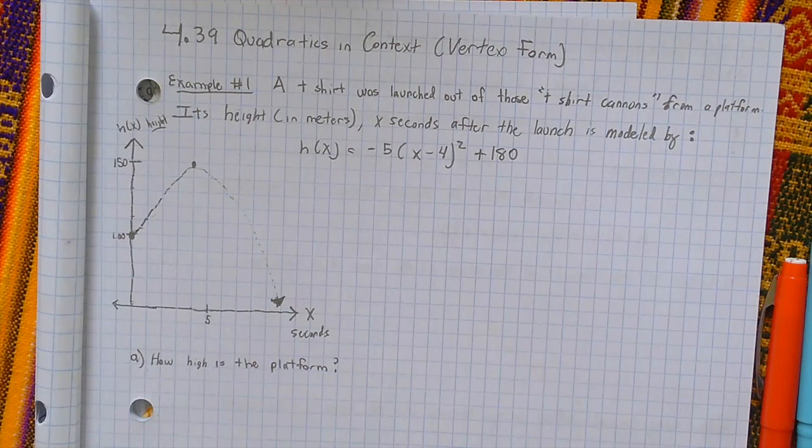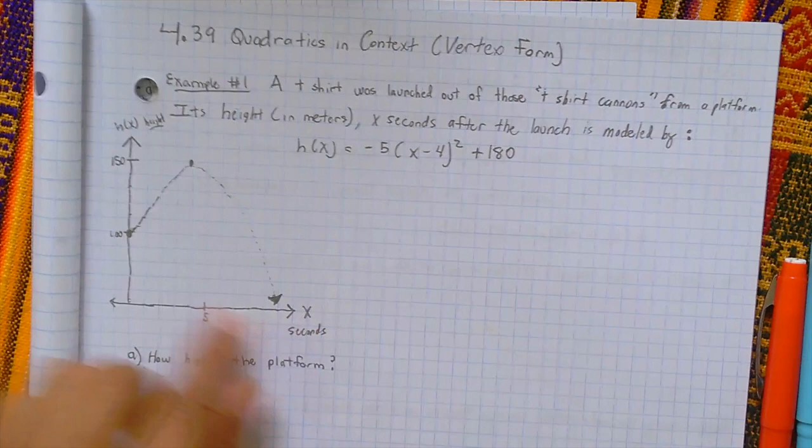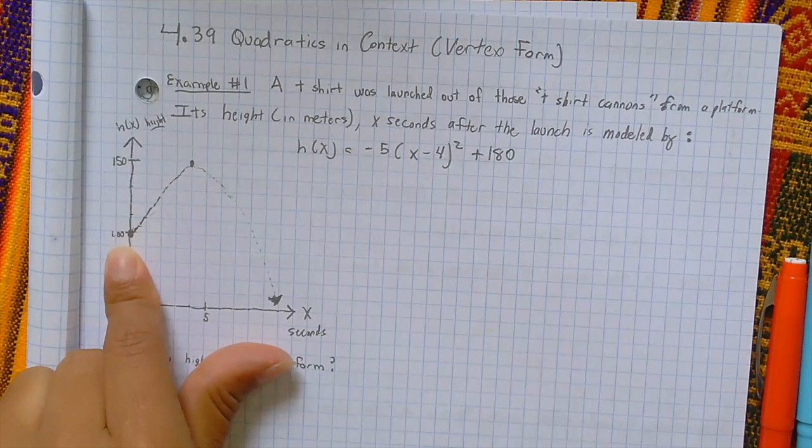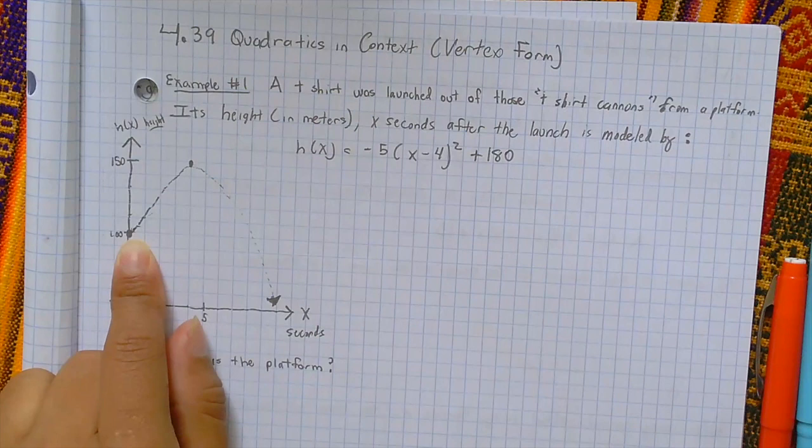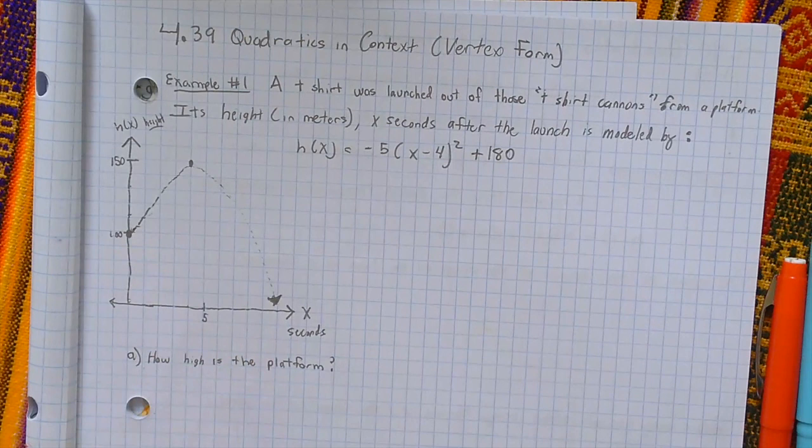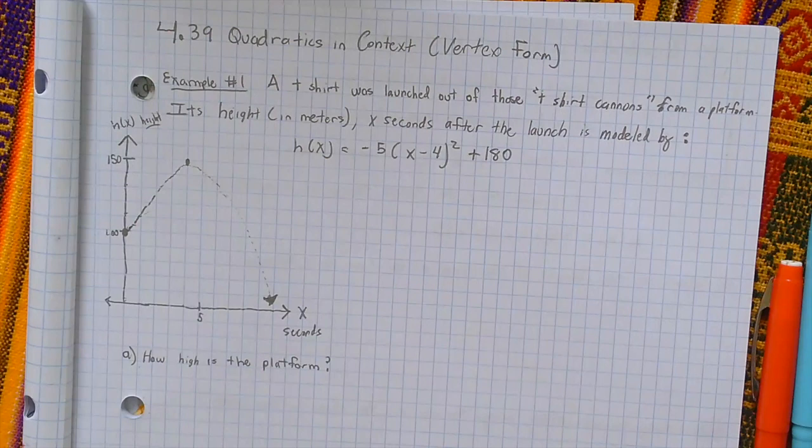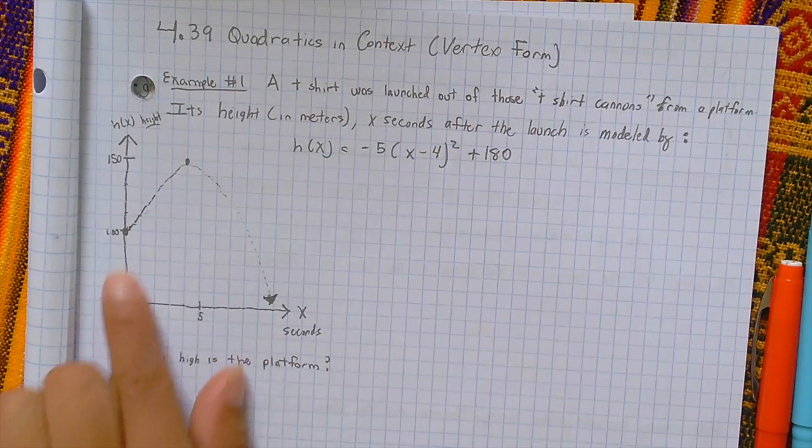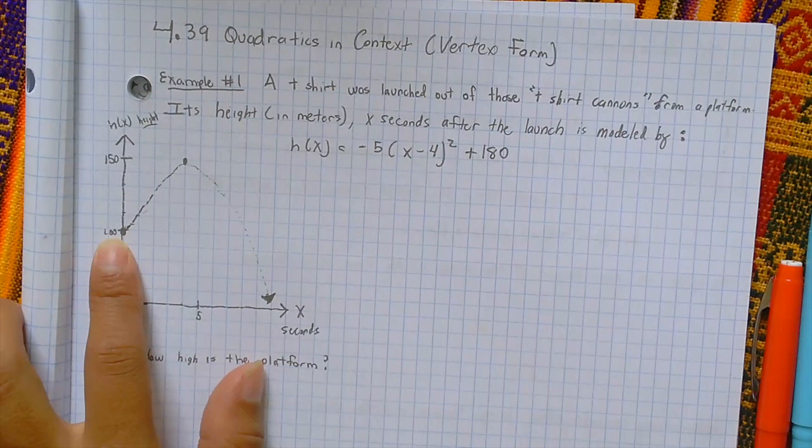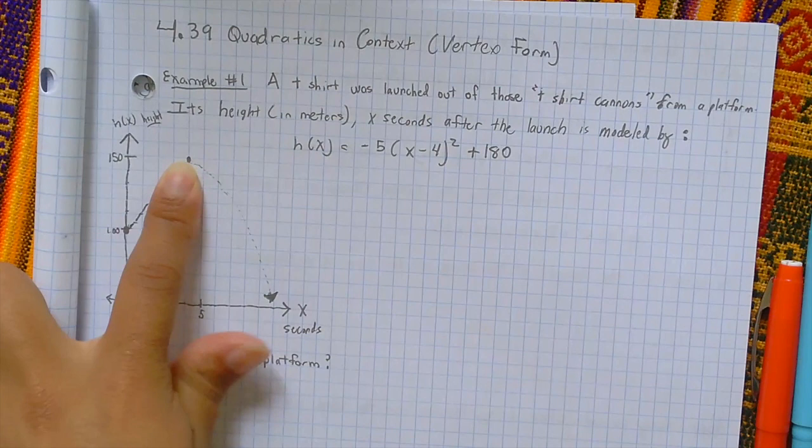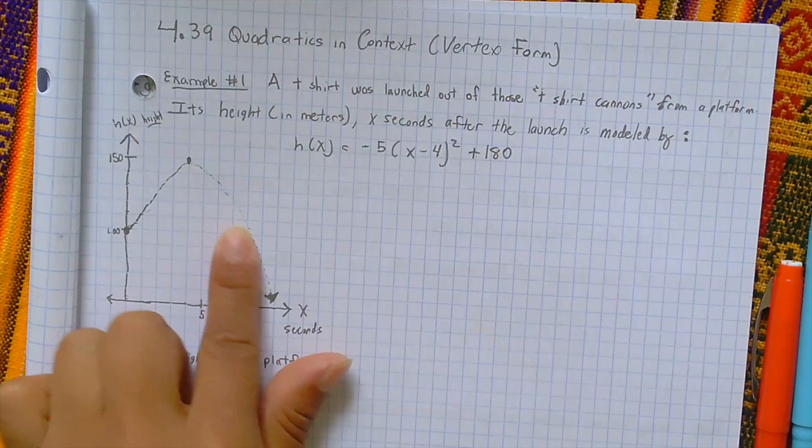We're going to start off by just referring back to our graph that we did yesterday. We have our initial value, which is when we, right before we shoot the t-shirt. We'll add a point when the amount of seconds we are given is zero. That here we have the initial point when there is zero seconds of having shot this cannon or a t-shirt, which will lead to the maximum point, or the vertex, maximum height. This will eventually lead to when it hits the ground, or the x-intercept.